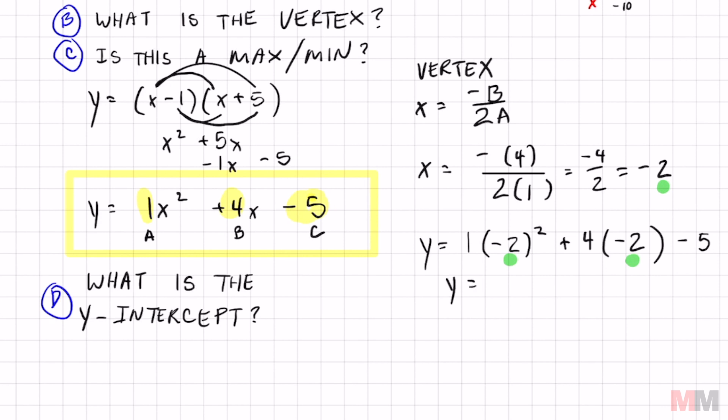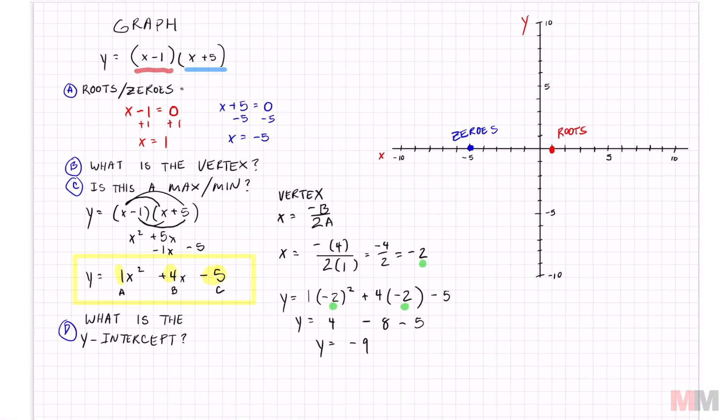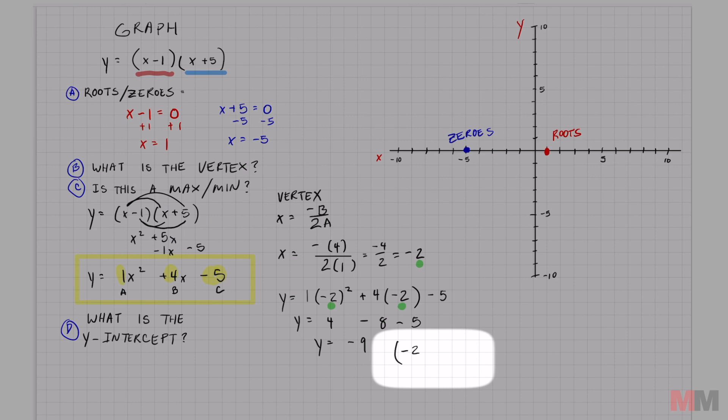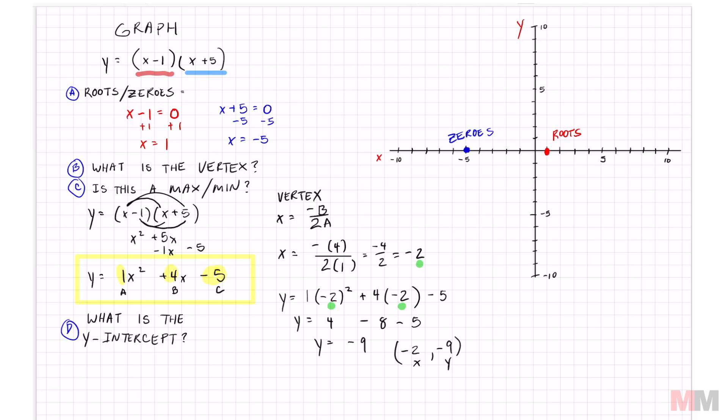Minus 5 and you get y. If you simplify that, that's just 4 minus 8 minus 5. y equals negative 9. Now I have a coordinate for my vertex. My vertex is negative 2 and negative 9. So that's a third point that I can put on my quadratic equation.